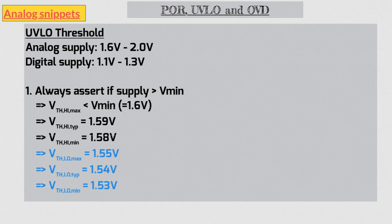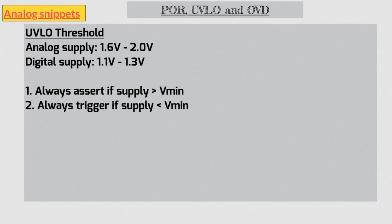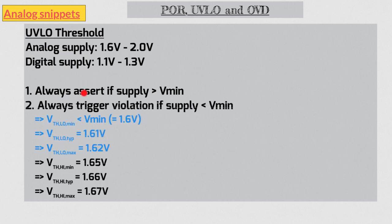A much better approach is to ensure that UVLO output always triggers if supply is lower than this minimum value. Following this approach, we can again calculate the threshold values. In this case, we start with the minimum of lower threshold value and then work our way up. Notice that in this case, in the worst case scenario, the UVLO will not assert until supply has crossed 1.67 volts. And in most scenarios that I have seen so far, it is fine. In most cases when your chip is starting up, you don't have any large loads on your supplies, so it is a good idea to have some margin when you do have some loads. And this is the approach that I have always taken in my own designs.